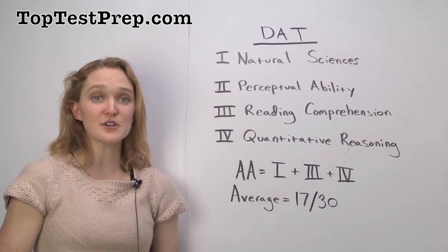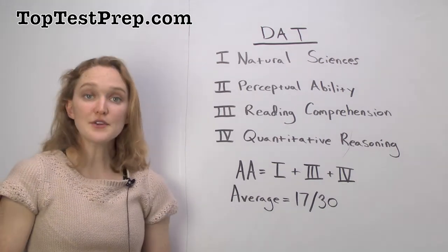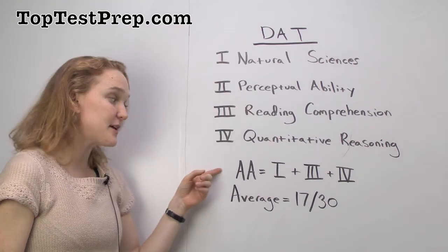Some schools just look at your total sciences score, which is really just the natural sciences. Other schools, however, use an academic average.